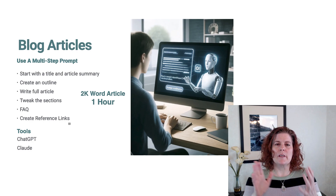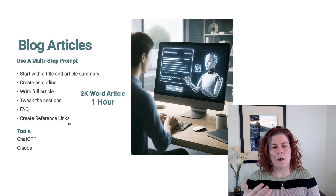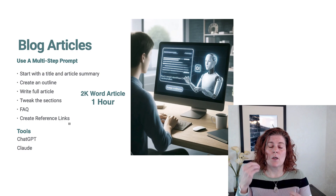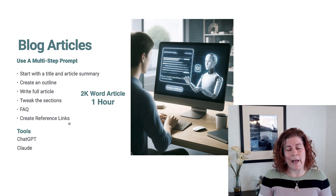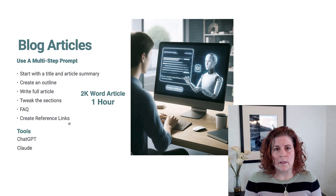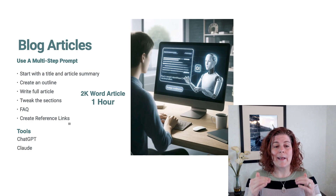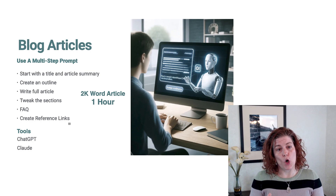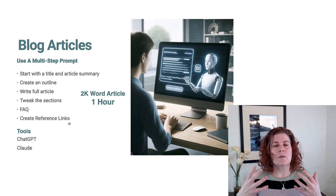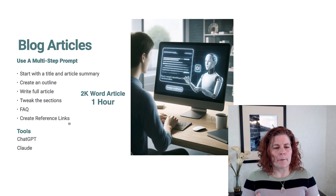What we do is use AI in partnership with our own knowledge and abilities, using a multi-step prompt to create an article. First, you start with a title and article summary — ask it to take a particular subject and write a title and summary. You'll read the summary, may ask it to make changes, and when you're happy with the summary and title, you use that and say 'now create an outline for a 2,000-word article based off the title and the summary.' When I use the word 'prompt,' it's really commands or requests — it's going to create your outline for you.